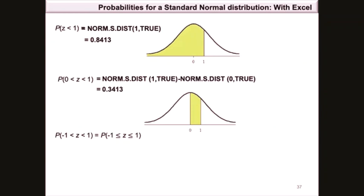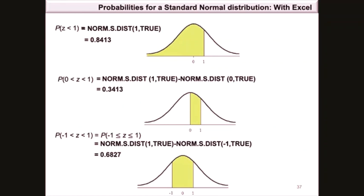The probability that z is between −1 and 1 (exclusive) equals the probability between −1 and 1 inclusive, since for any continuous distribution the probability of a single value is 0. On the graph this is the shaded area between −1 and 1. Using norm.s.dist: norm.s.dist(1, TRUE) minus norm.s.dist(−1, TRUE) gives 0.6827.